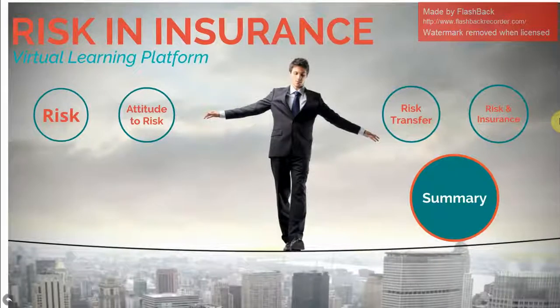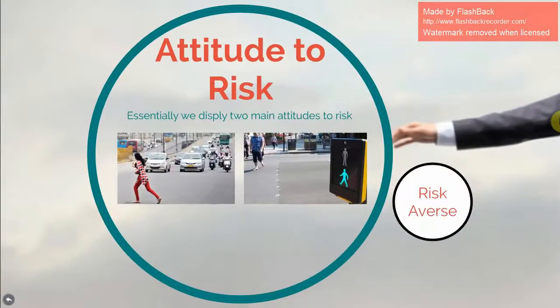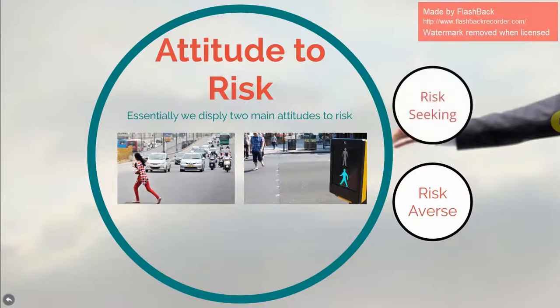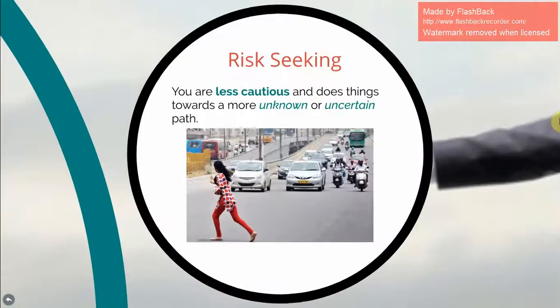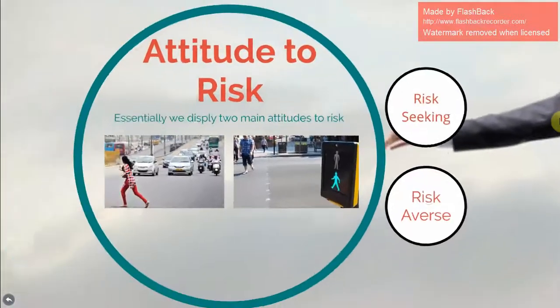Essentially we display two main attitudes to risk. Some risk prevents us from doing certain things, but usually we find ways to accept and move around the risk. When we do this we are essentially risk managing. For example, instead of crossing the road we may choose to use the subway. So your approach to risk is driven by your attitude to risk.